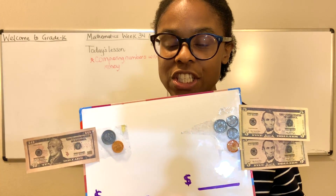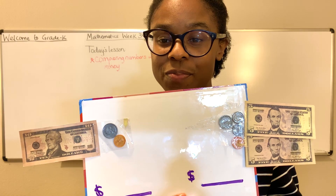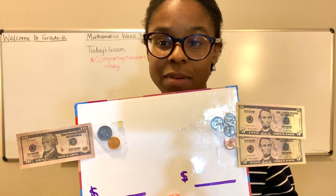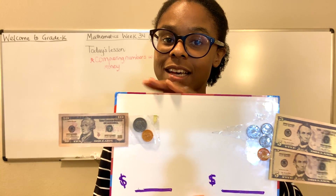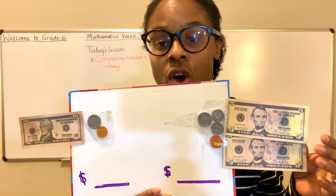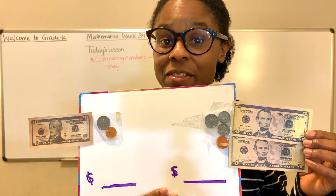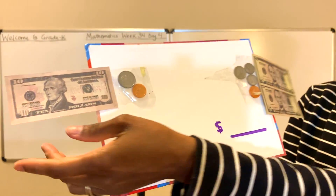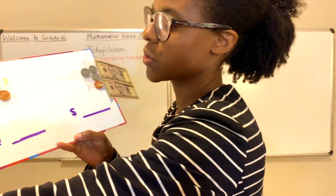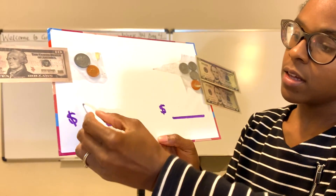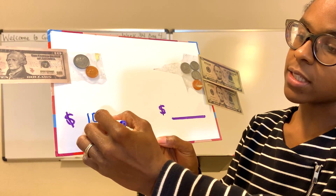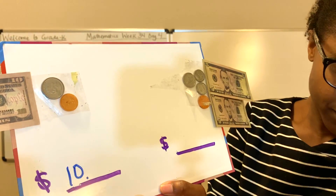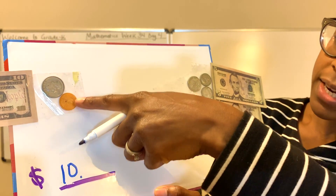My question today is, by looking at it initially, what side do you think has the most money — this side or this side? Well, if you said they're even, they're equal, then you're correct. Let's find out why. So this is $10. The first part is $10 — that's the dollar part. And counting the coins, that's $0.25 and a penny, which is $0.26. So this side is $10.26.